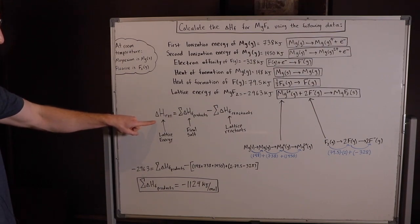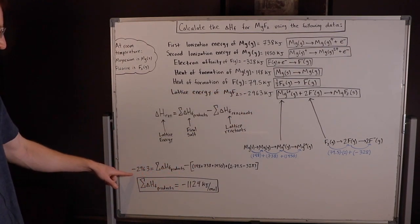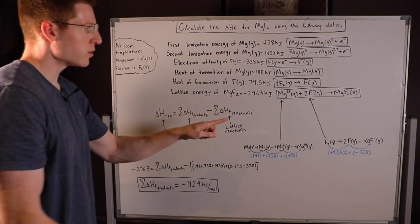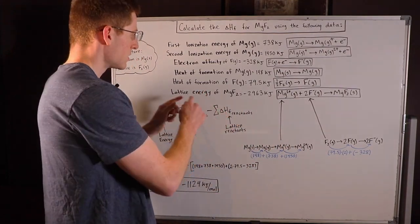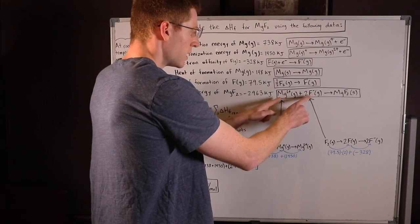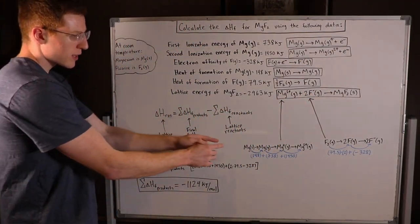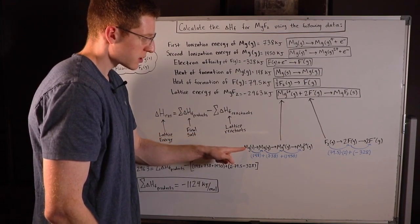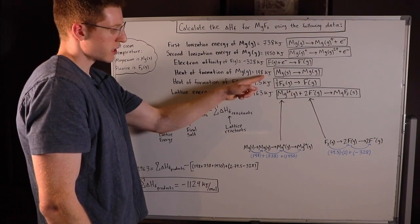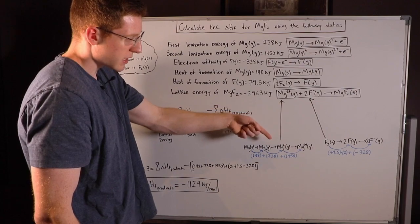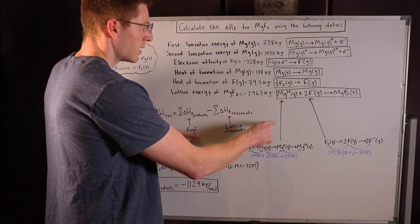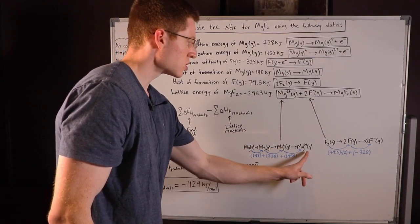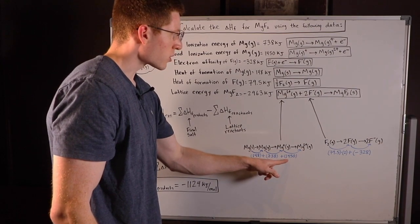We know we have the lattice energy — they gave that to us: negative 2,963 kilojoules. Now we have to find the enthalpy of the lattice reactants. We started in our standard states: magnesium solid, then went to magnesium gas, which cost 148 kilojoules. Then from magnesium gas to magnesium plus gas — first ionization — associated with 738 kilojoules. Finally, we ionized magnesium a second time, from magnesium plus gas to magnesium 2-plus gas, costing 1,450 kilojoules.